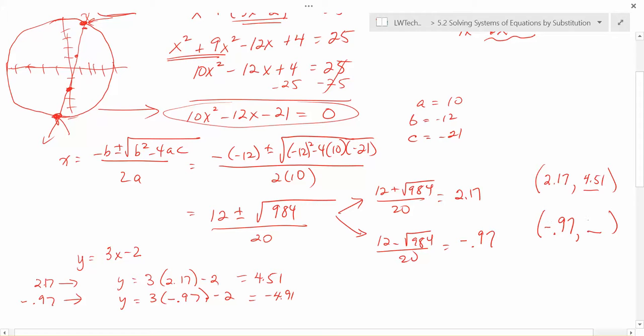So 2.17 and positive 4.51. Negative 0.97 and negative 4.91. And you can kind of see up here, right? If this is 5 is this high point of the circle and negative 5 is the low point of the circle, we're a little bit in from that. And that's where we kind of get those other values there. But algebra was able to find those values very nicely.